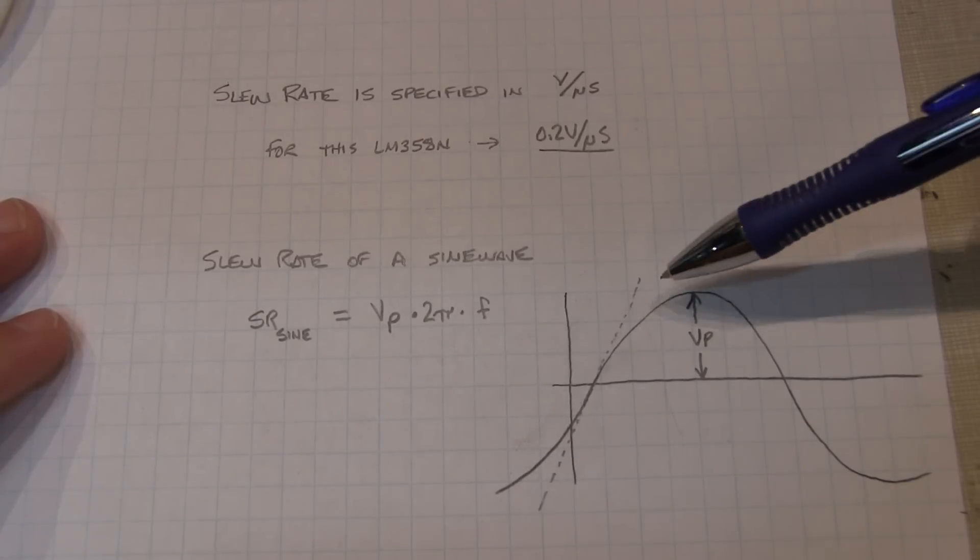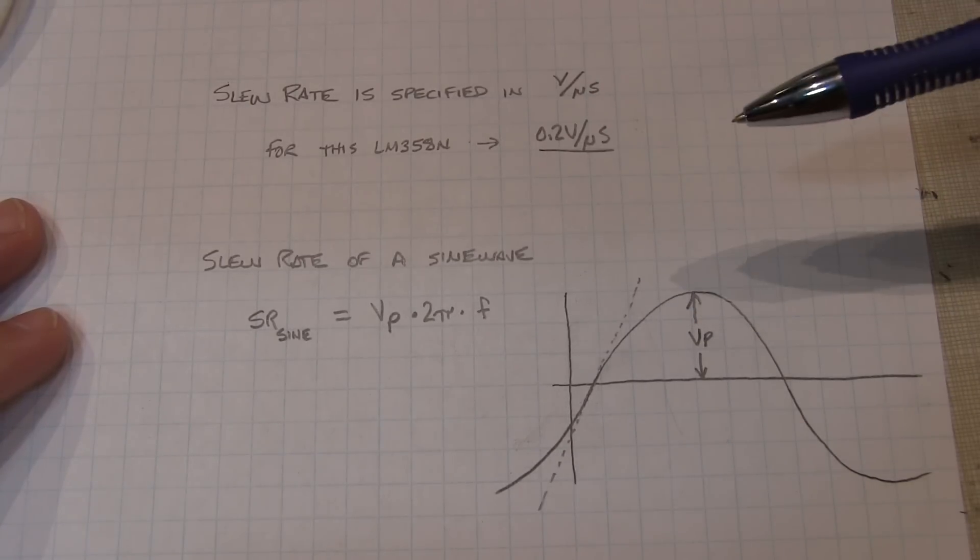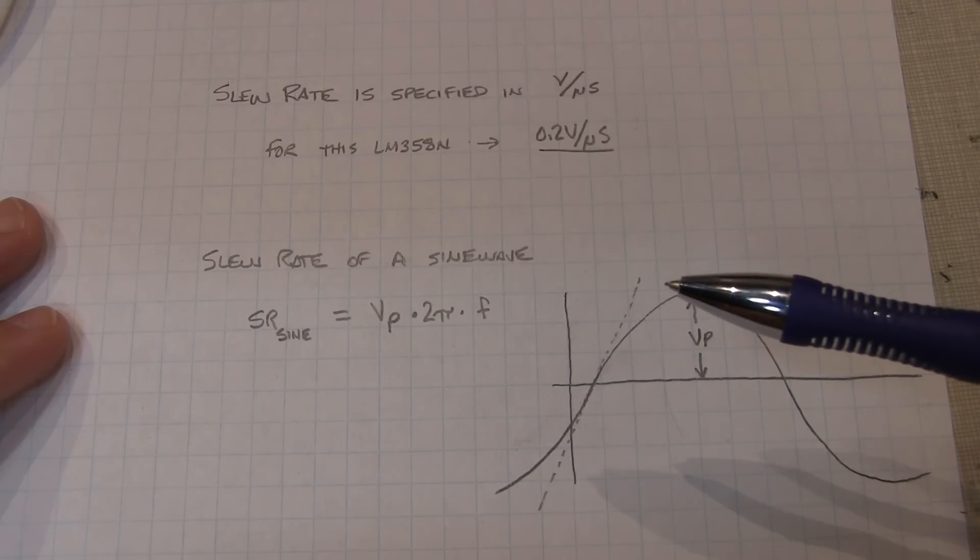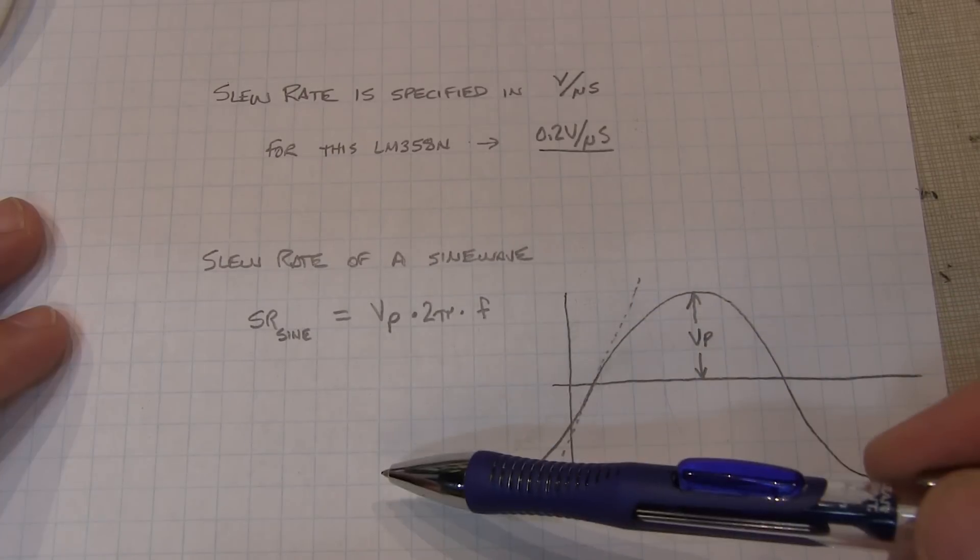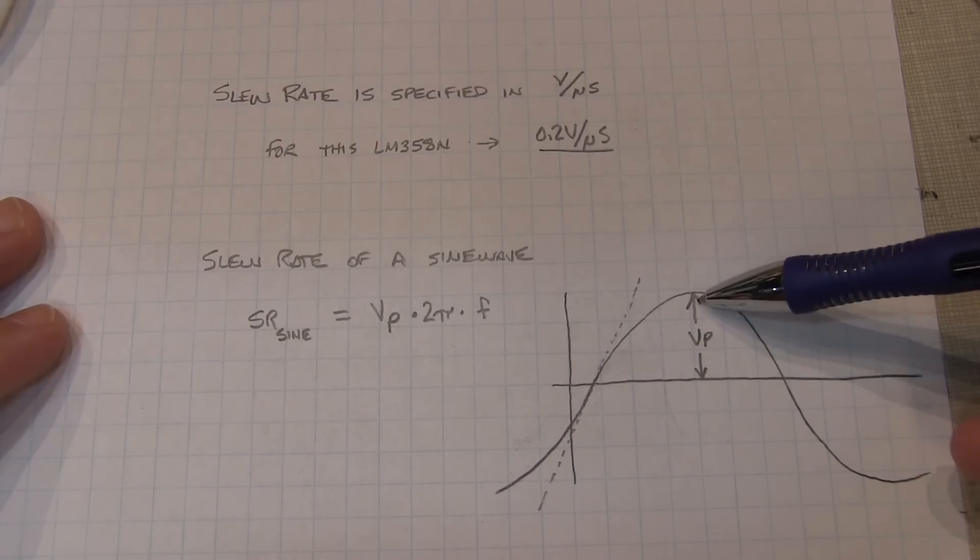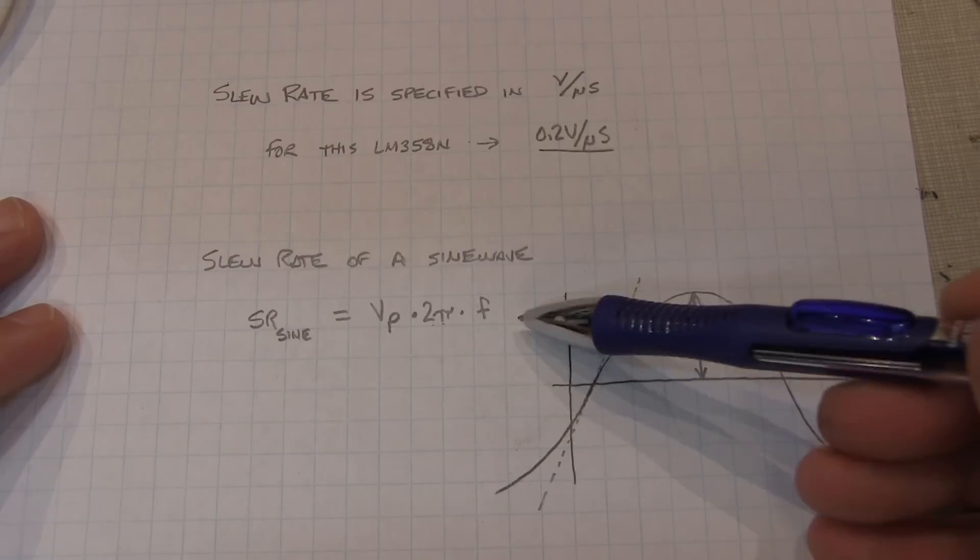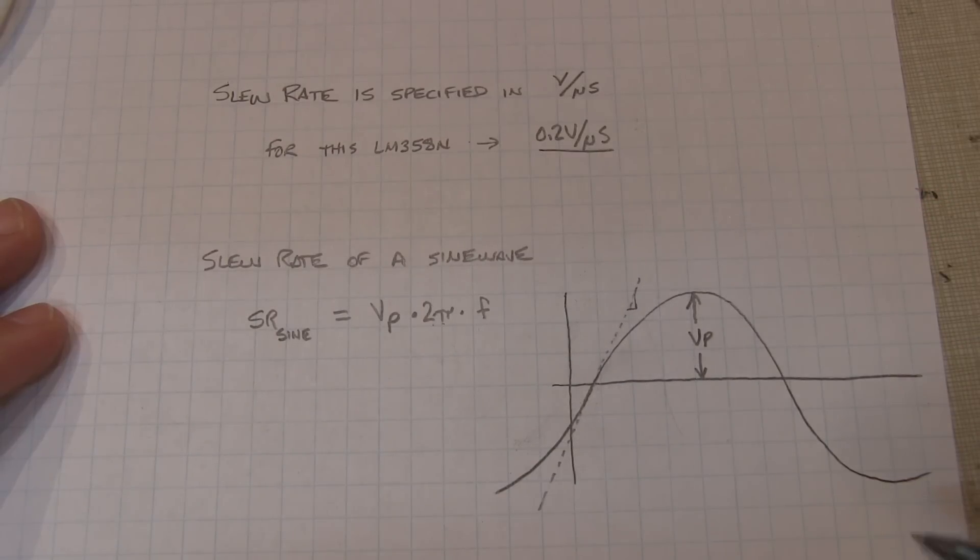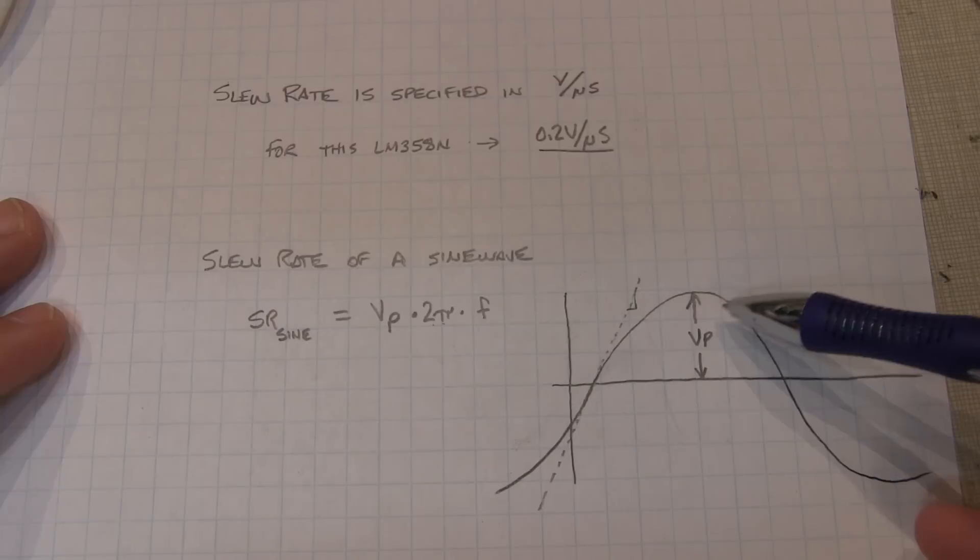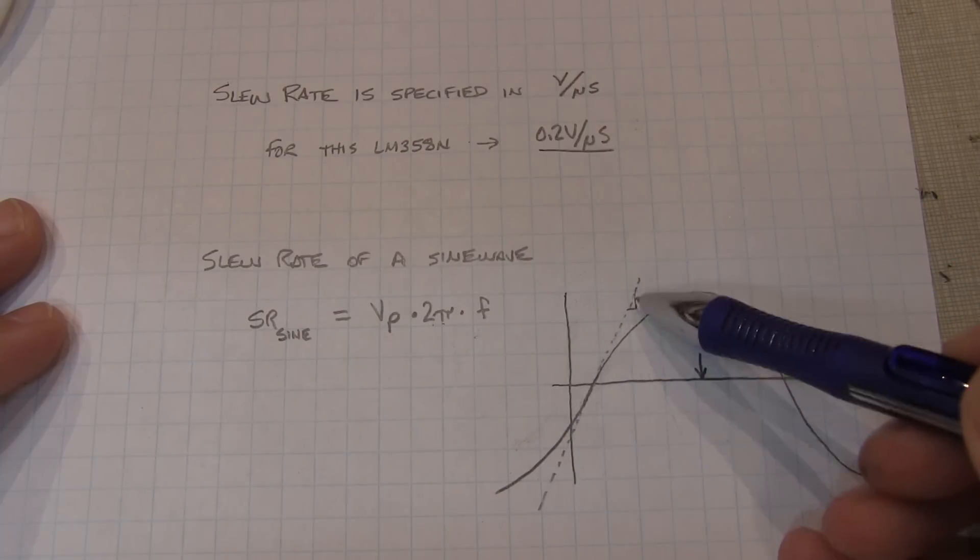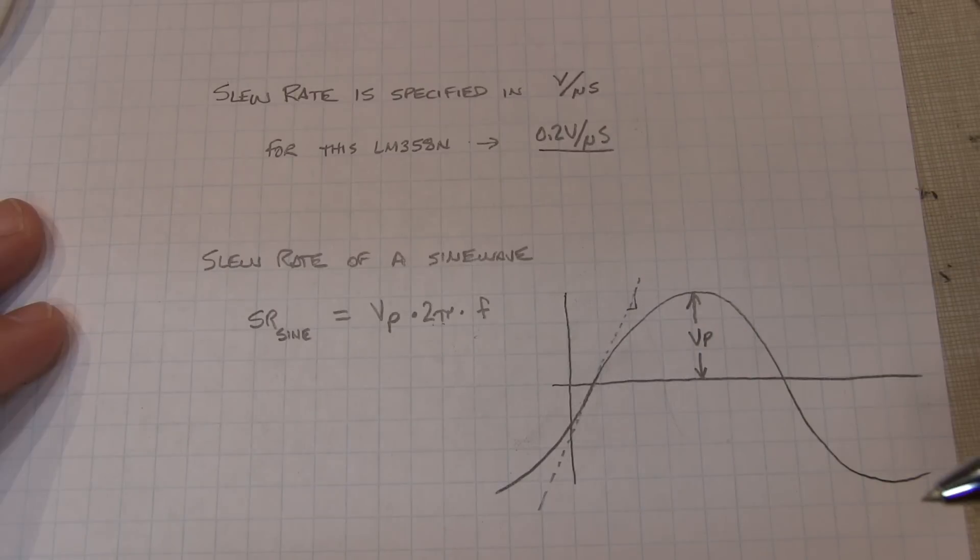So we can relate that back to the sinusoidal frequency as well. For this op amp, we're looking at about 0.2 volts per microsecond. And let's say we're going to be putting a sine wave through the amplifier, and you know what peak voltage you're going to need out of that. You can basically calculate the slew rate of the sine wave through this formula. You take the peak voltage of the sine wave multiplied by 2π times the frequency of that sine wave, and that will give you the slope, or the maximum slope, the steepest that that voltage needs to change. So as long as the slew rate of that sine wave is less than the slew rate limit for the op amp, then you'd be able to use that op amp at that frequency.